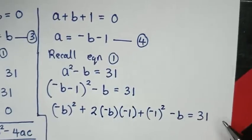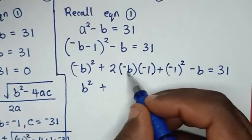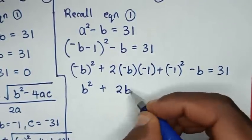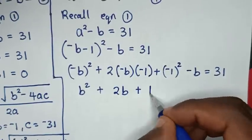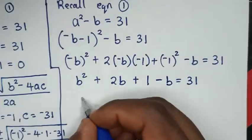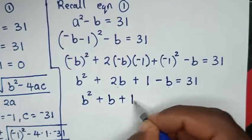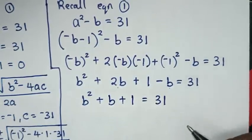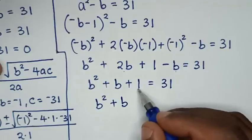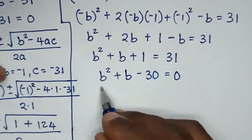Expanding further: b squared plus 2b plus 1 minus b equals 31. Combining like terms: b squared plus b plus 1 equals 31. Taking 31 to the left side gives b squared plus b minus 30 equals 0.